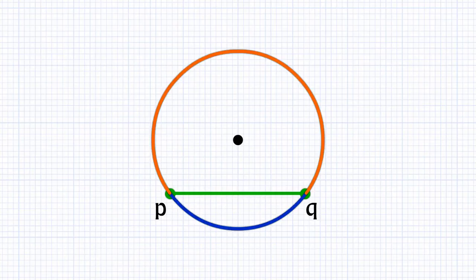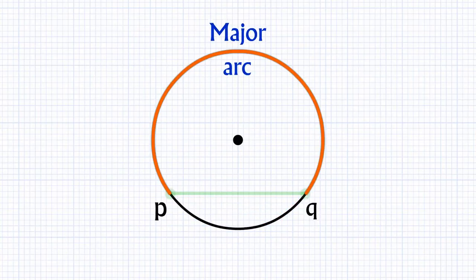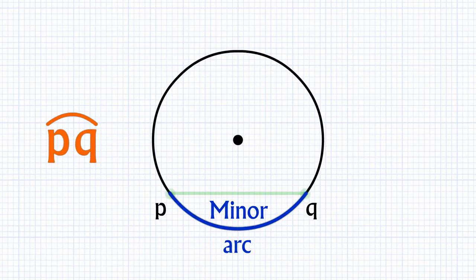It divides circle into two parts: Minor arc PQ and major arc PQ. Symbol for minor arc PQ is this. You write PQ and on top, you draw a little arc like this.